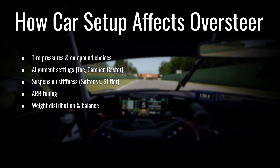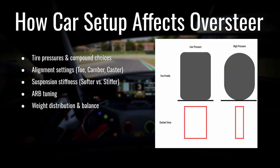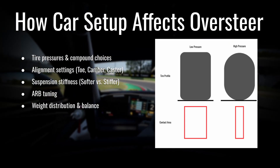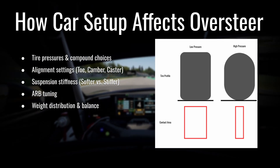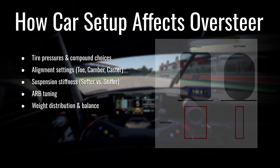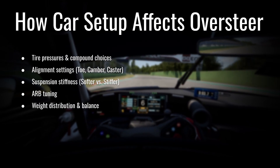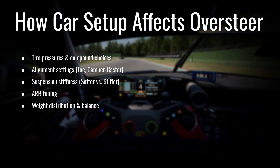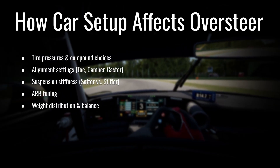You can also correct oversteer through setup — starting with tire pressures. Higher tire pressure means less grip on that tire, because adding pressure, even in small increments, shrinks the contact patch between the tire and the racing surface, decreasing grip. If you're running into oversteer, you can increase tire pressure in the front to even out the balance of the car, or decrease tire pressure in the rear to add more grip there.